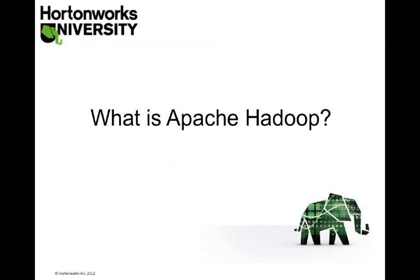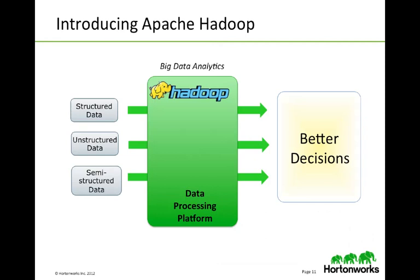So what is Apache Hadoop? Apache comes from the Apache Software Foundation. Apache Hadoop is free to license, free to use, and available to download from the Apache Software Foundation. What Apache Hadoop allows you to do is take all of those different types of data, store them, analyze them, and make better decisions. You're no longer kept to whatever technology you have in-house to handle only structured data. This analytics platform will allow you to build analysis on far greater numbers of data.